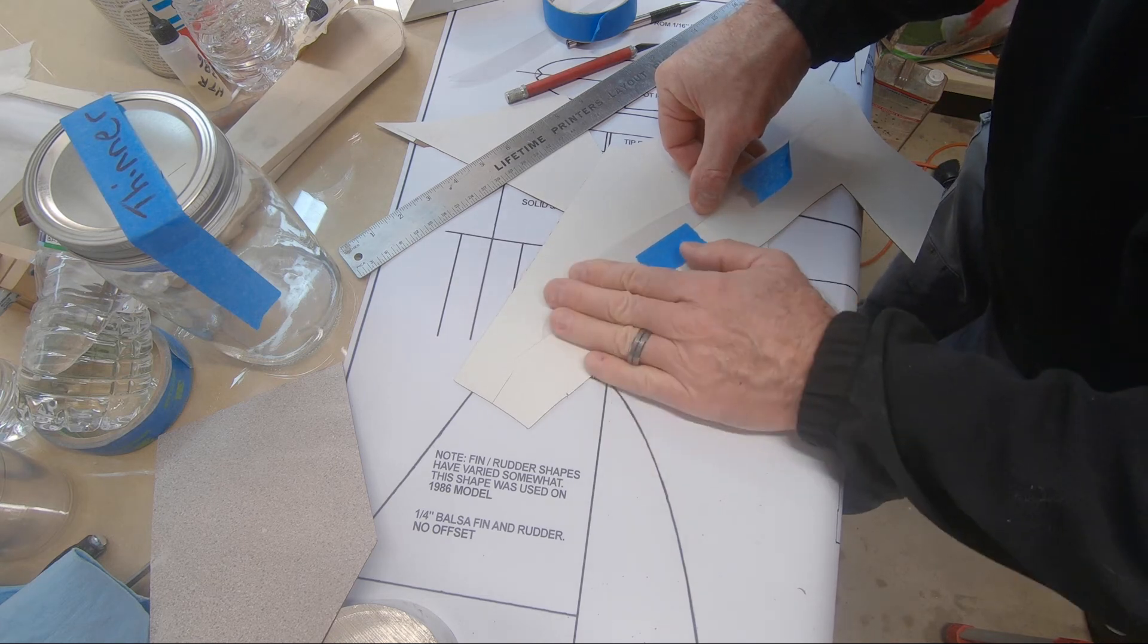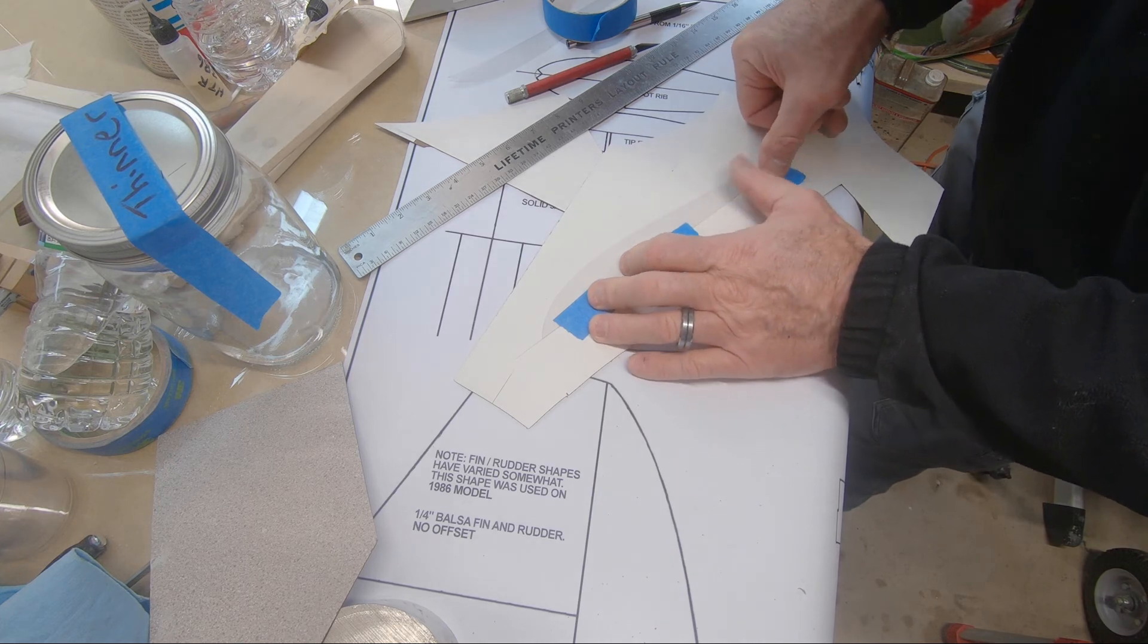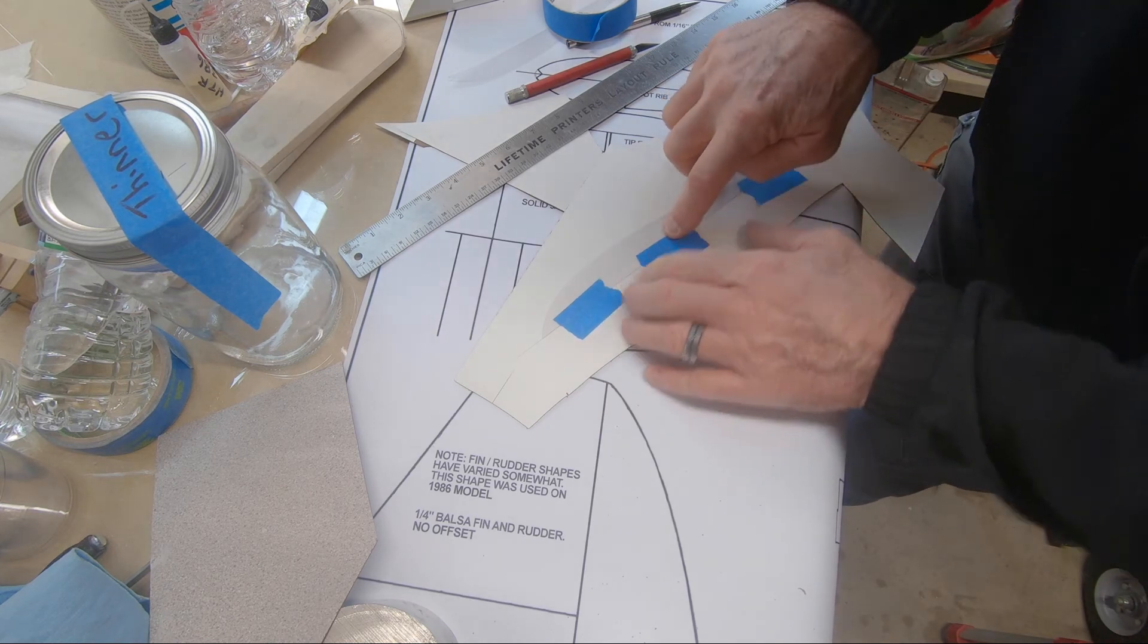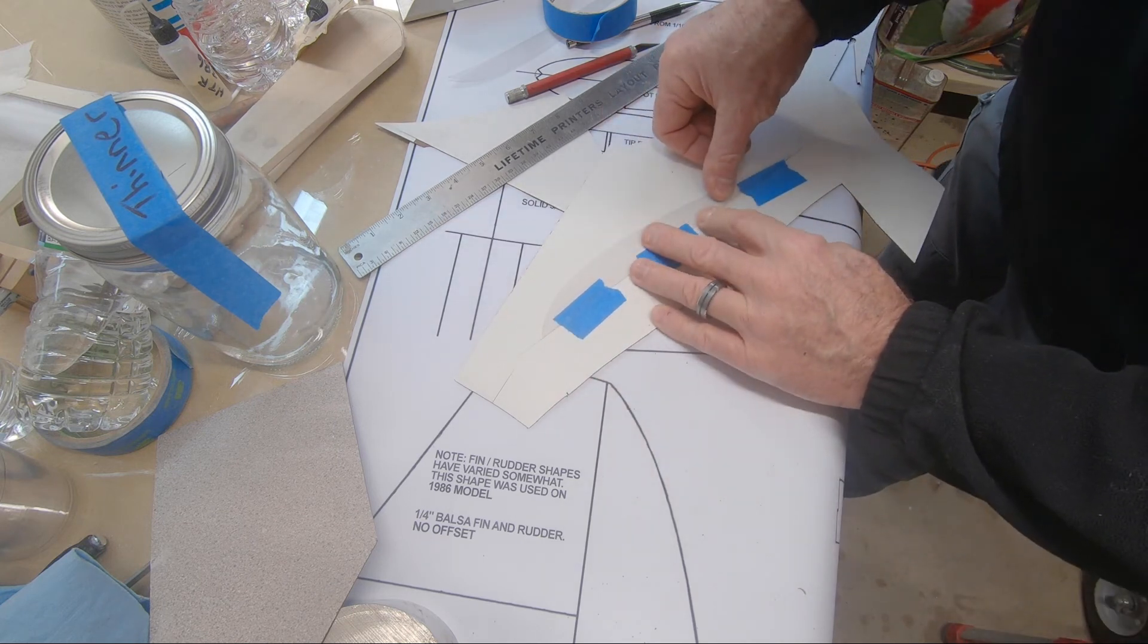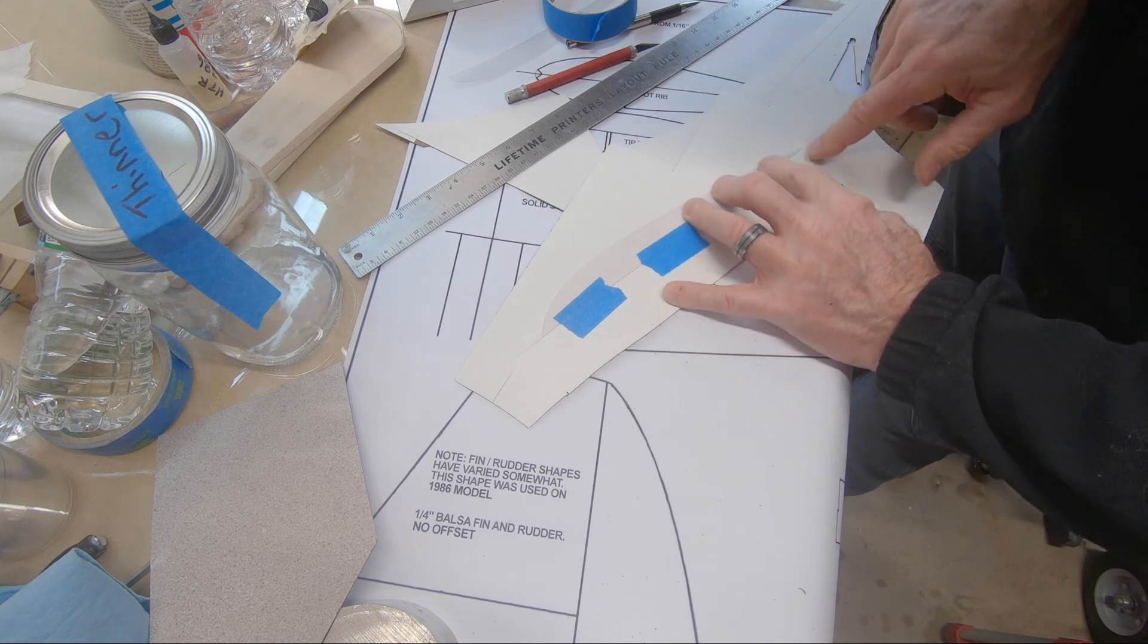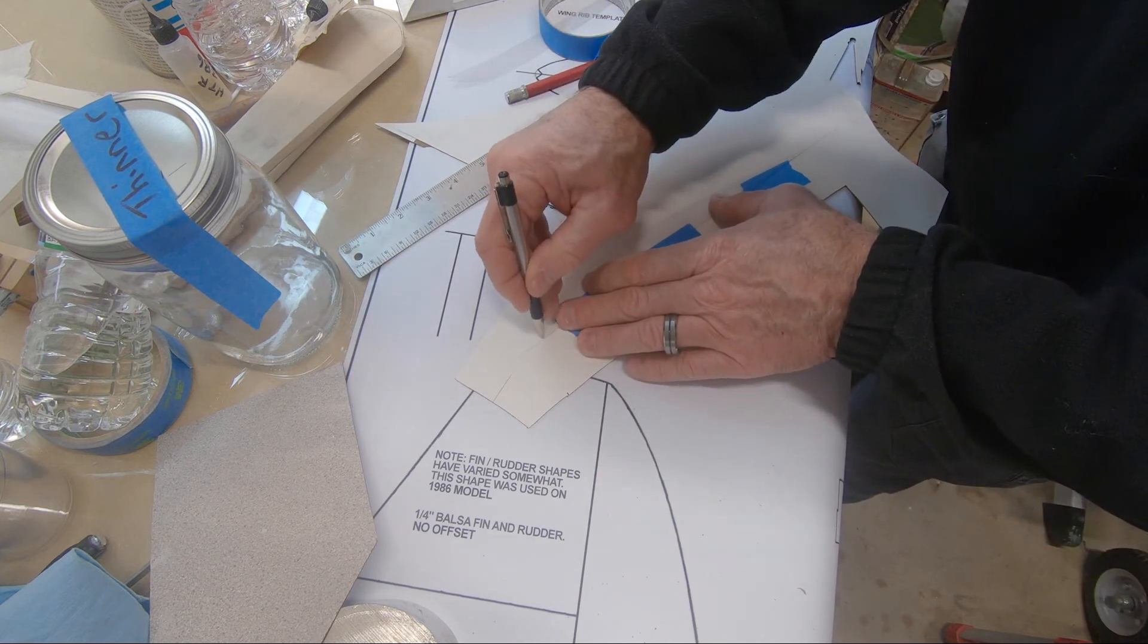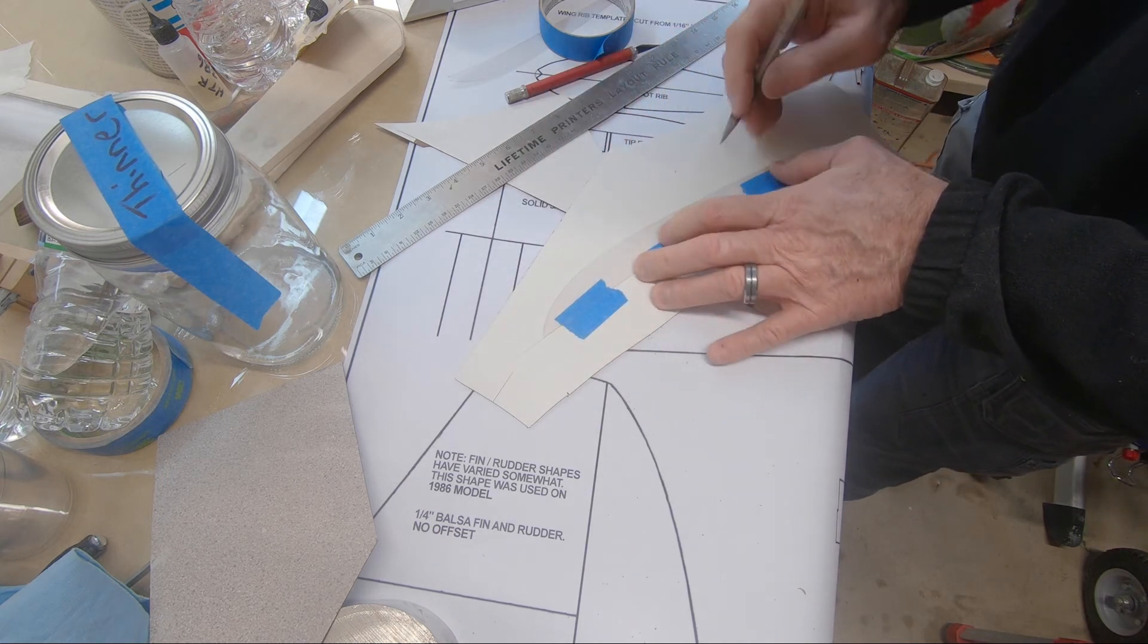And then I'm going to tape this C-Temp directly on that line. Now, if you decide to go right on top of the line, when you flip this over to get the mirror image, you want to line it up the same way. So, what I'm looking at here, this bottom of this C-Temp is laying right on top of that line.